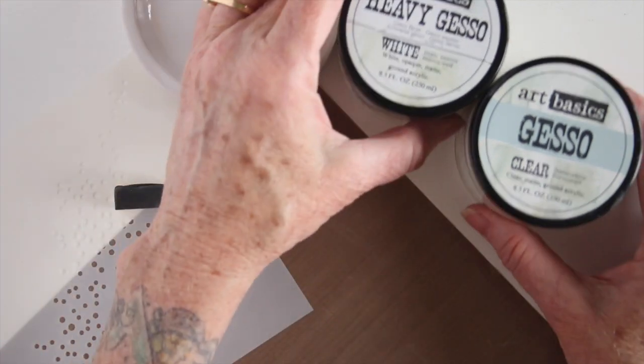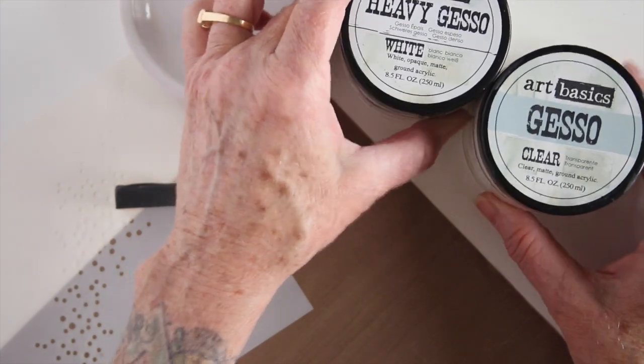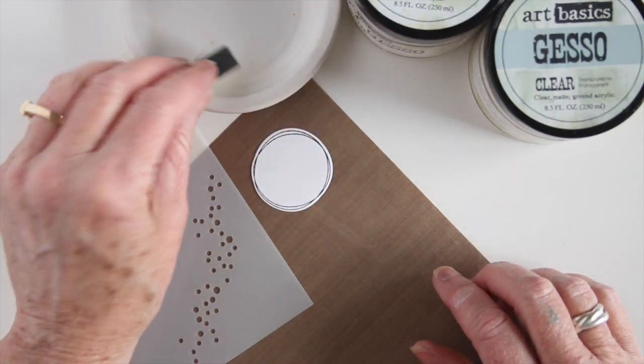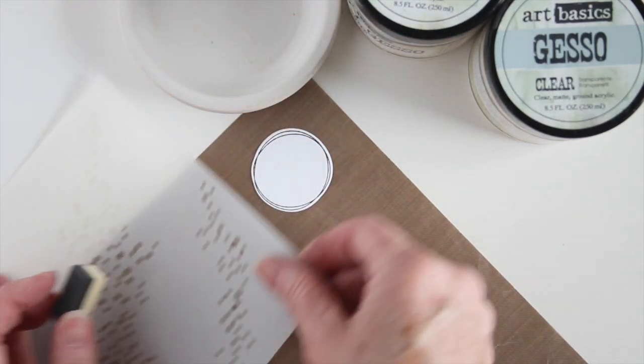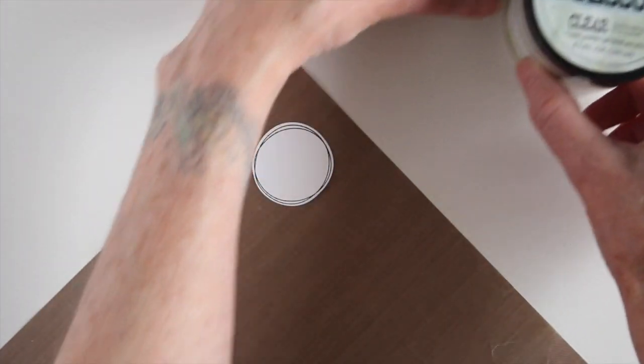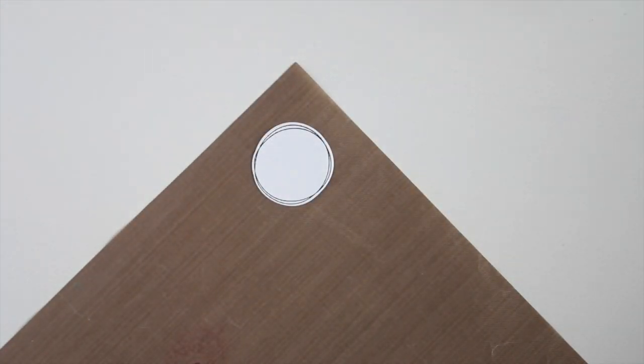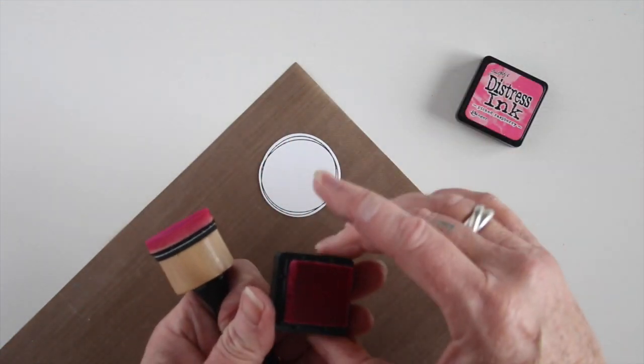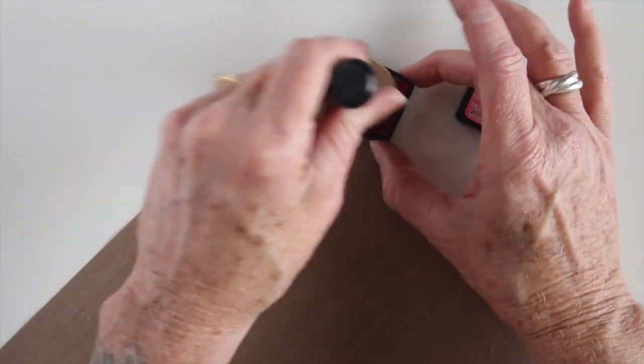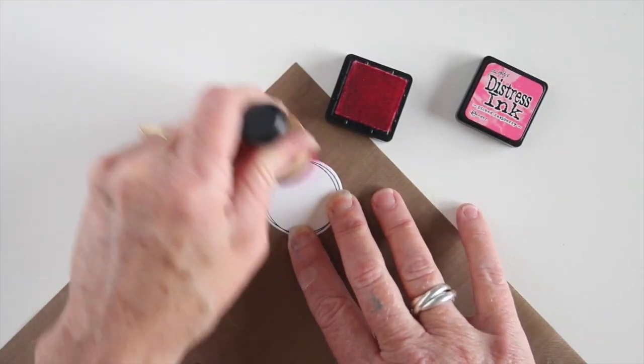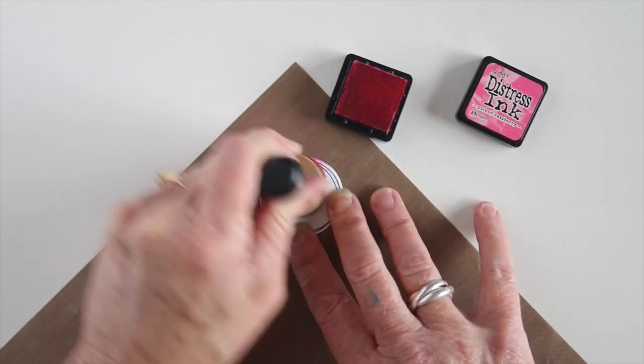Gesso has many great uses and for this I'm going to try to do kind of a lighter tone resist so it'll be a little bit lighter. Again I'm using my cut and dry foam onto the plate and then through my stencil and I've already added my gesso to my piece of paper. So I'll go ahead and get out my inks and start coloring. For this one I'm using picked raspberry ink and once I get going I'll show you how it's going to give me just a little lighter color.